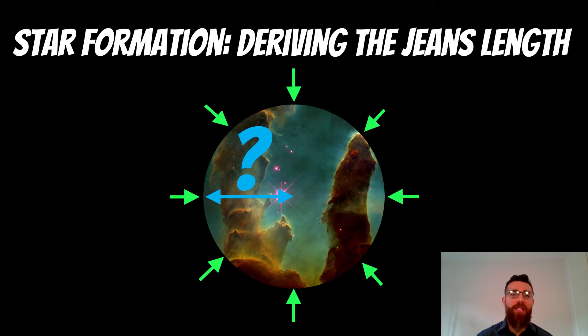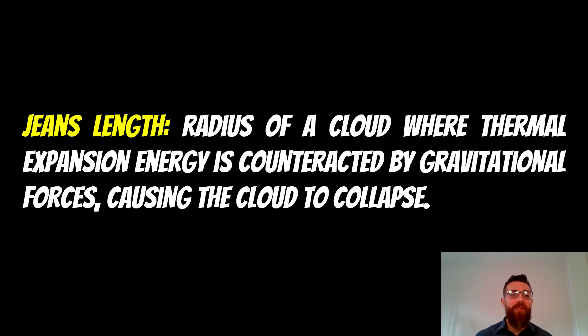Welcome to this video about the Jeans length and how to derive it. But first we're actually going to have a quick look at what the Jeans length actually is. The definition of the Jeans length or the radius is the radius of a cloud where the thermal expansion energy is counteracted by gravitational forces. This would cause the cloud to collapse.